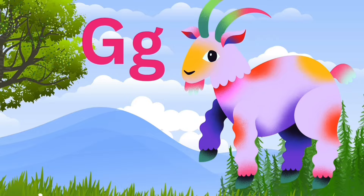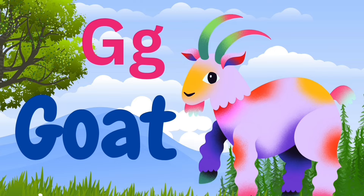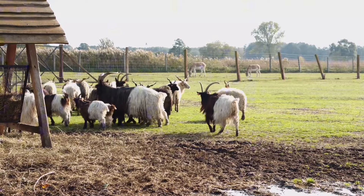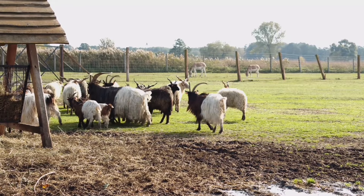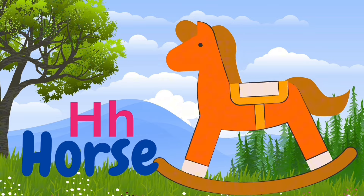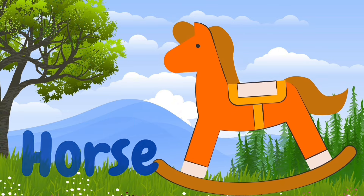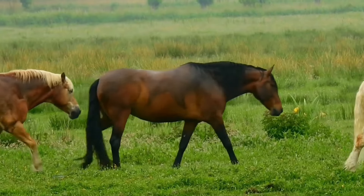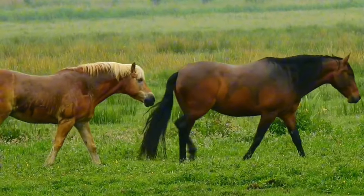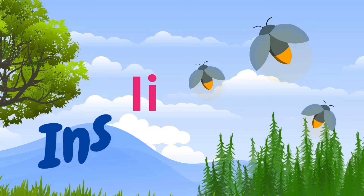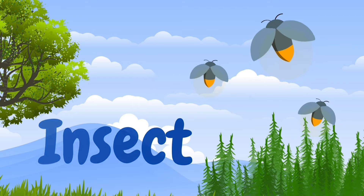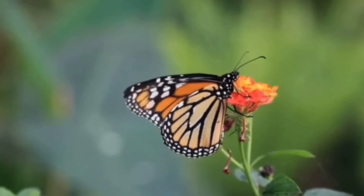G is for goat. G, G, goat. H is for horse. H, H, horse. I is for insect. E, E, insect.